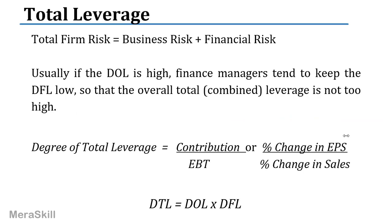The total firm risk is the business risk plus the financial risk. Usually, if the degree of operating leverage is high, finance managers tend to keep the degree of financial leverage low, so that the overall combined leverage does not go too high — if the degree of operating leverage is high.